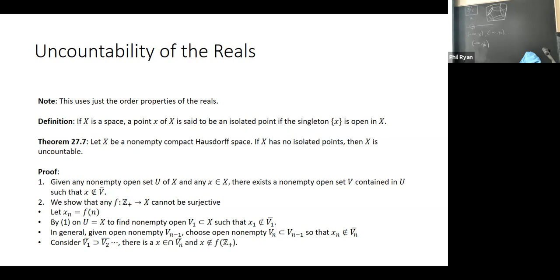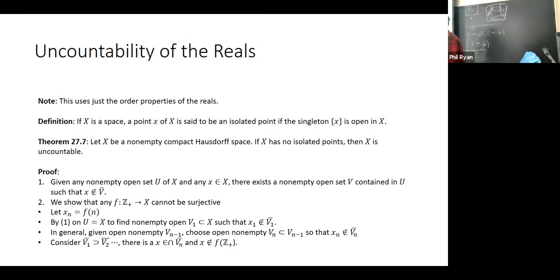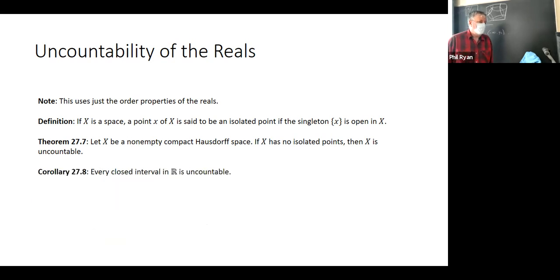That's pretty. All you're doing is starting with the interval [0,1], picking a point, finding an open interval, picking another point, finding an open interval whose closure doesn't include that point, and by the finite intersection property there has to be a point left over — so you can't count them all. By corollary, every closed interval in ℝ is uncountable.